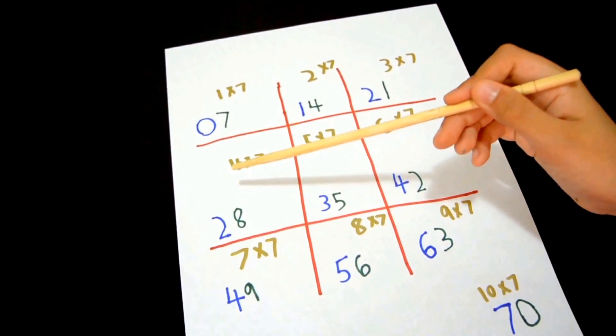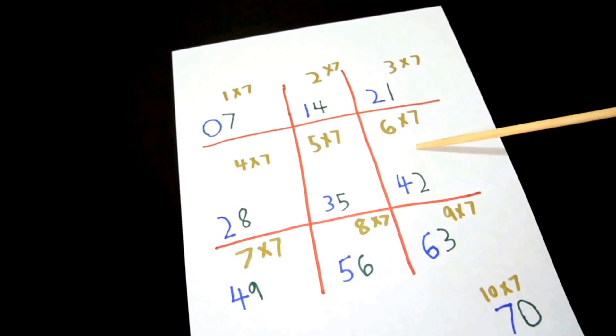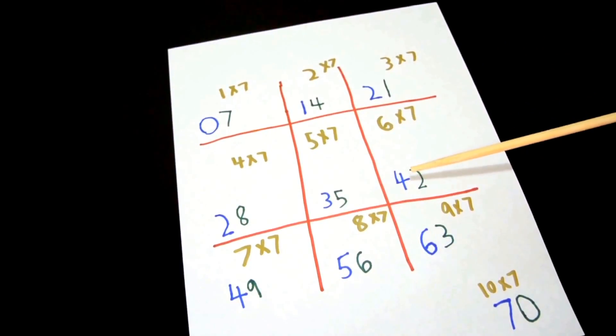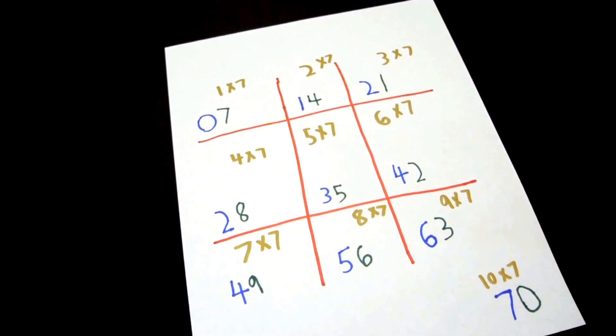And repeat the 2 in the second line. And 2 to 4 right here. And repeat the 4 again right here.